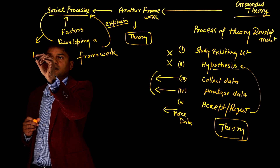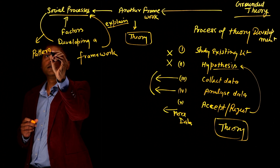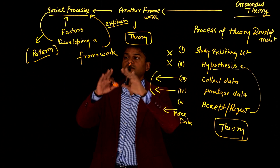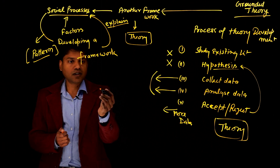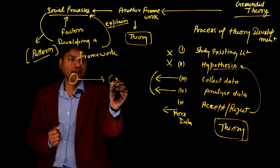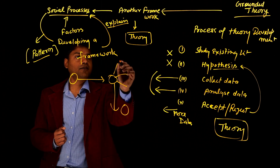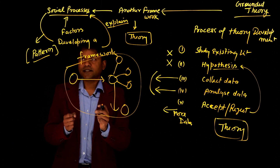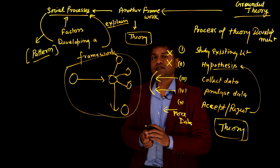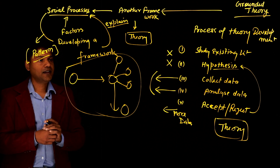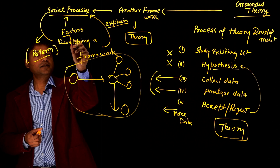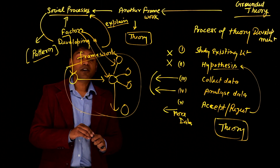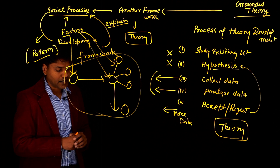When I say social process, another thing to keep in mind is the pattern — what those patterns of this phenomenon look like. So in a study, I can say this thing leads to this thing, which leads to this thing. What is happening here is I'm developing a framework, developing a process related to the phenomenon I am interested in, understanding the pattern of this phenomenon, and trying to understand the whole process and underlying factors involved in the phenomenon. Grounded theory is focused on understanding social processes.